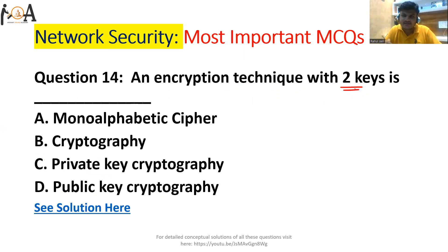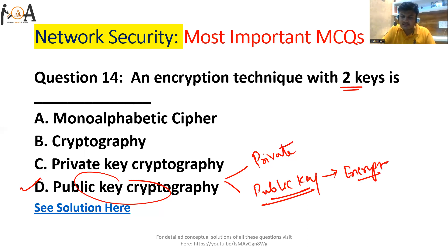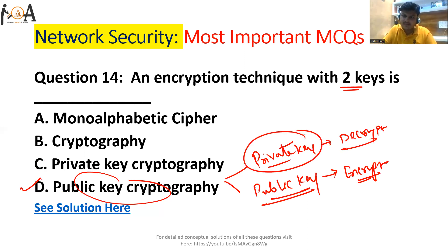Question number 14: An encryption technique with two keys. This is called public key cryptography. It has two keys — one is a private key and another is a public key. The public key is used to encrypt the text and the private key is used to decrypt it. The technique which uses two keys is called public key cryptography, so option D is the correct answer.